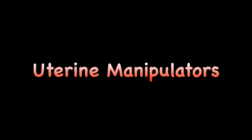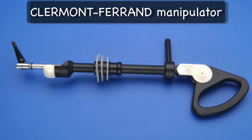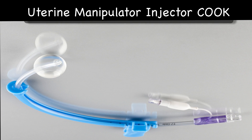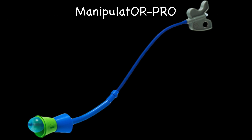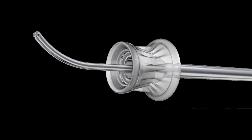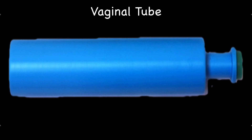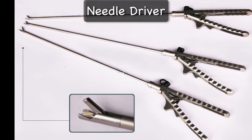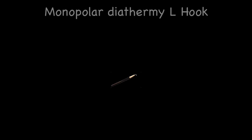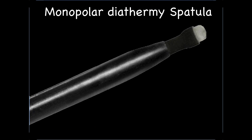Now I will show different types of uterine manipulators. Clamophera manipulator. Cook uterine manipulator and injector. Manipulator probe. Secufix uterine manipulator. Plastic vaginal tube. Endoscopic needle driver. Monopolar diathermy L-hook. Monopolar diathermy spatula.